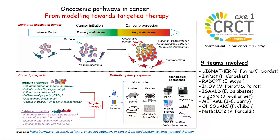The goal of the AXIS is to federate people who work on this topic. We currently have nine teams involved in the AXIS, including team leaders, staff members, and students. The goal is to federate all of them in order to share our expertise and opportunities in modeling the oncogenic pathways involving cancer resistance and involved in this multi-step process of the disease.